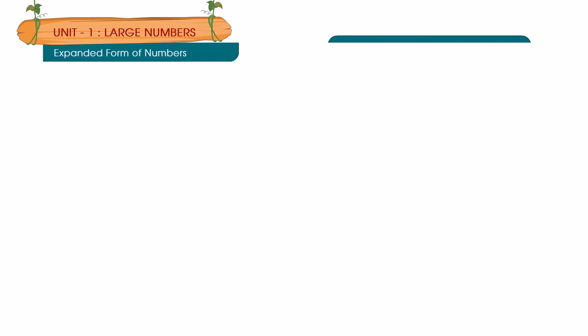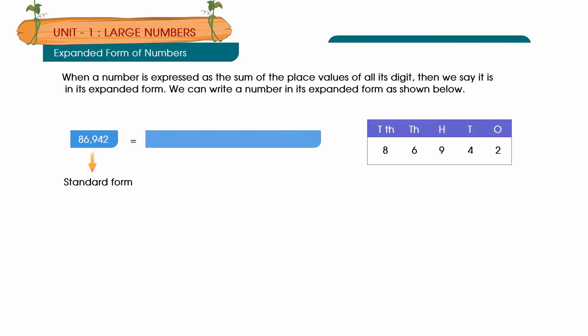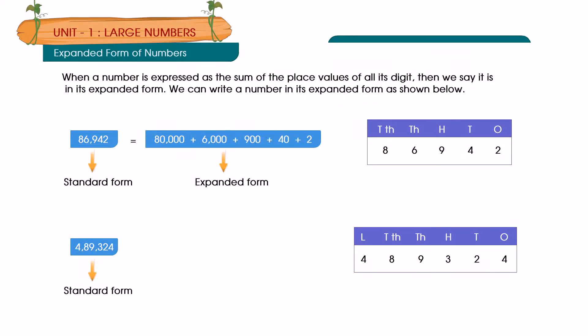Expanded form of numbers: When a number is expressed as the sum of the place values of all its digits, then we say it is in its expanded form. 86,942 Standard form equals 80,000 plus 6,000 plus 900 plus 40 plus 2 Expanded form. 4,89,324 Standard form equals 4,00,000 plus 80,000 plus 9,000 plus 300 plus 20 plus 4 Expanded form.